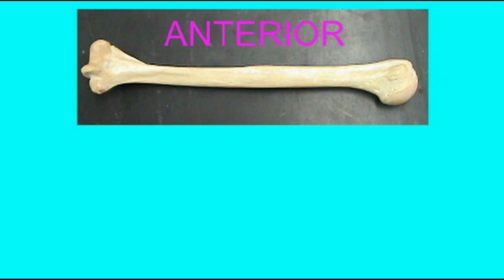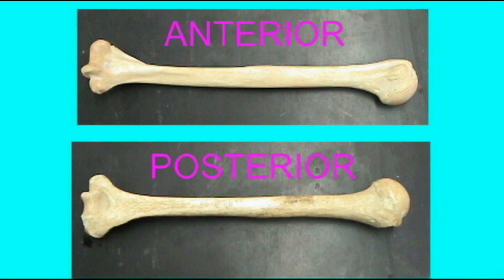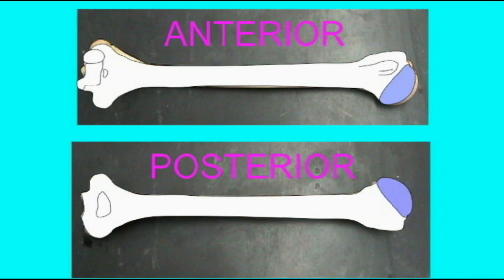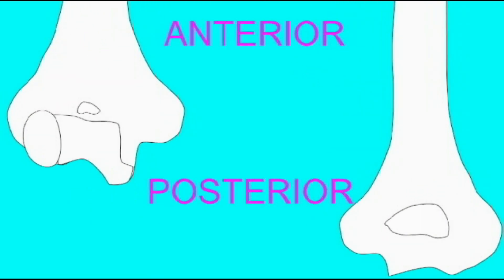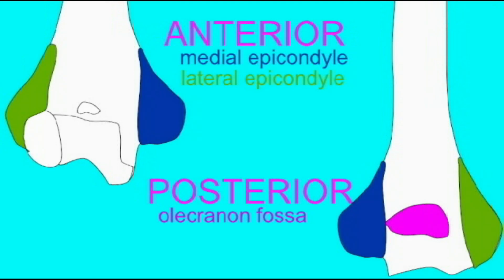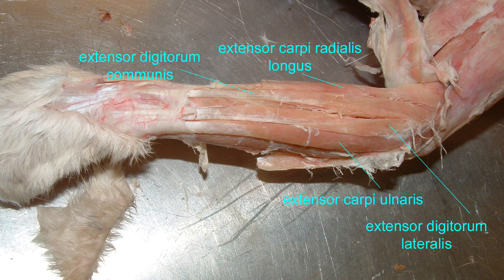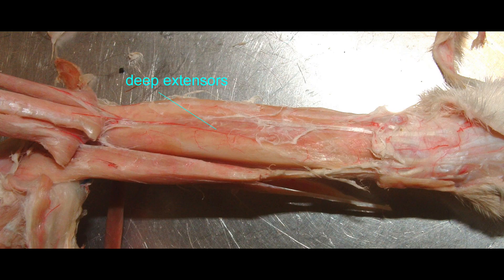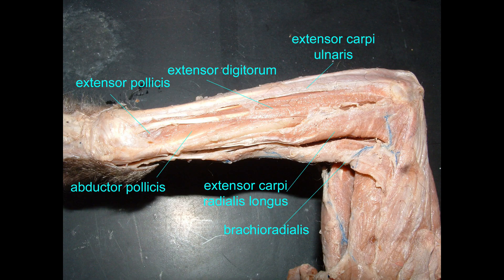There are a number of forearm muscles located in the posterior compartment of the forearm, many originating from the lateral epicondyle of the humerus. As can be seen in these images of the cat and monkey, there are both superficial and deeper muscles in this compartment.